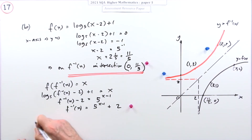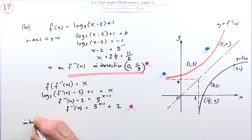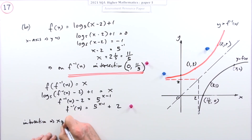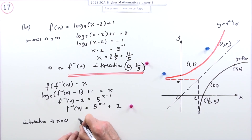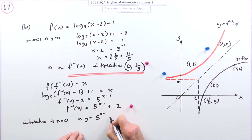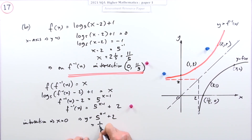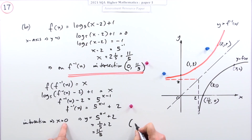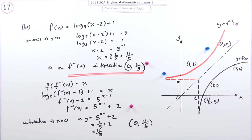Now you can find the y-intercept directly. When x equals zero: y equals five to the power (0 minus 1) plus two, which is five to the power negative one plus two, which is one fifth plus two, which equals eleven over five. So the point is (0, 11/5).